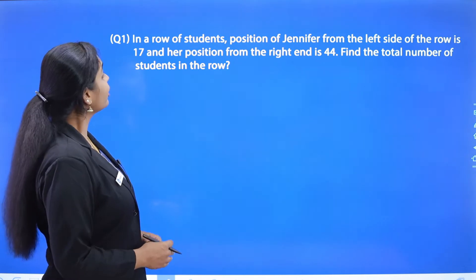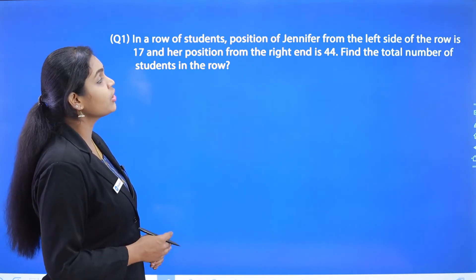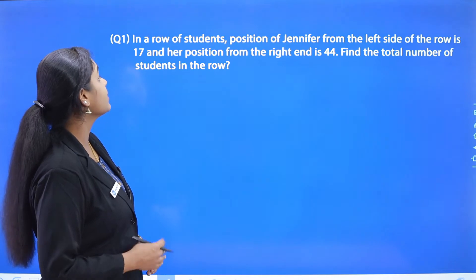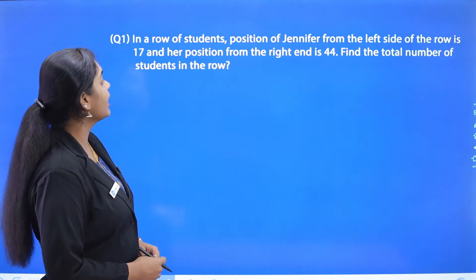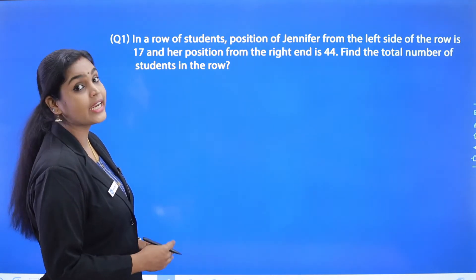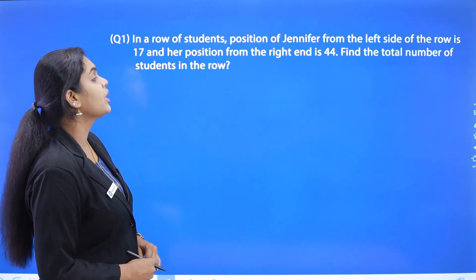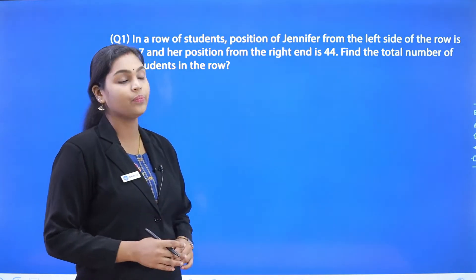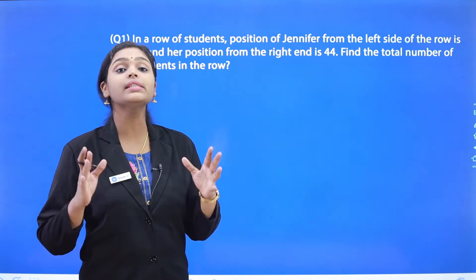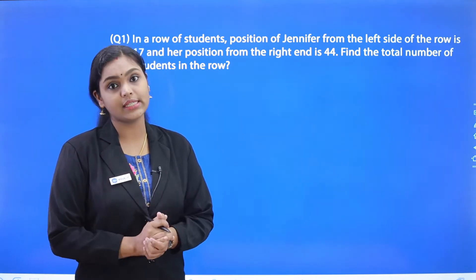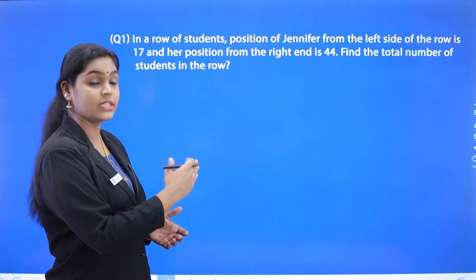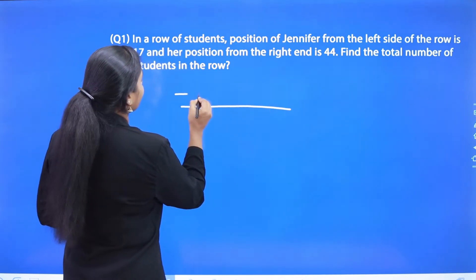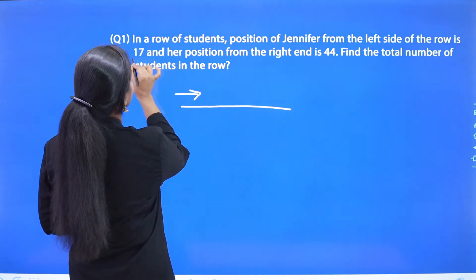Question number one: In a row of students, the position of Jennifer from the left side of the row is 17, and her position from the right end is 44. Find the total number of students in the row. Here, the position of the same person is given from both left and right ends.